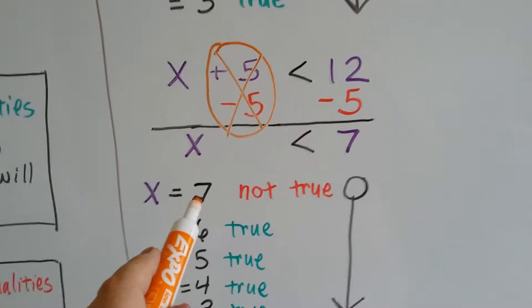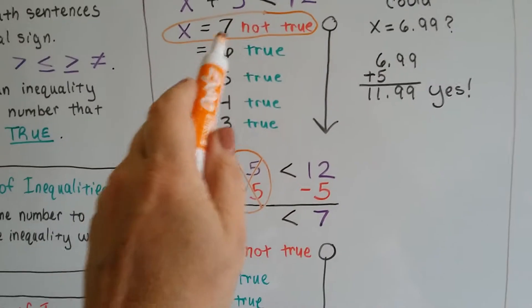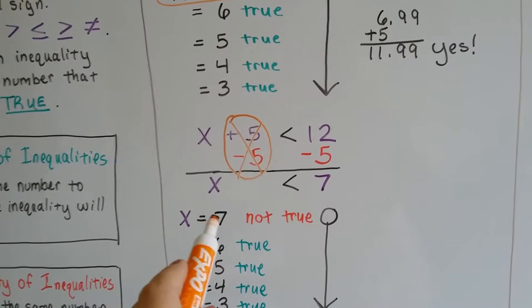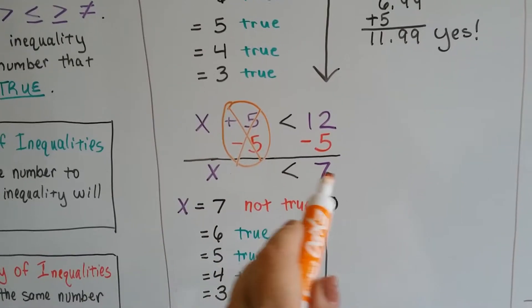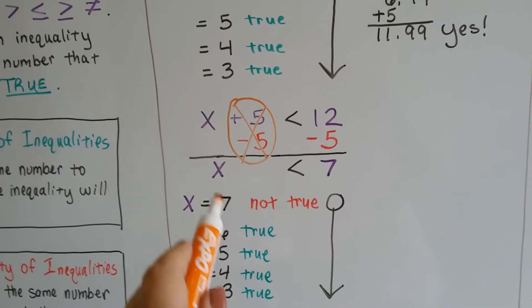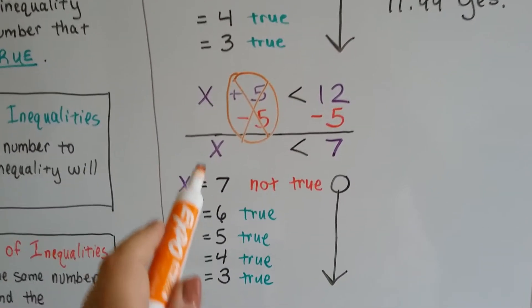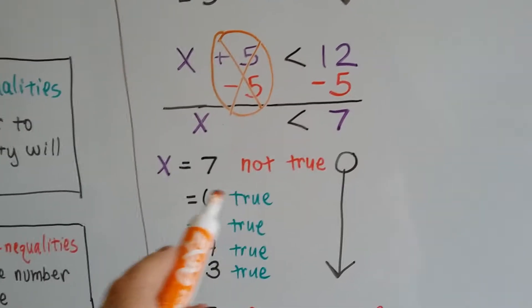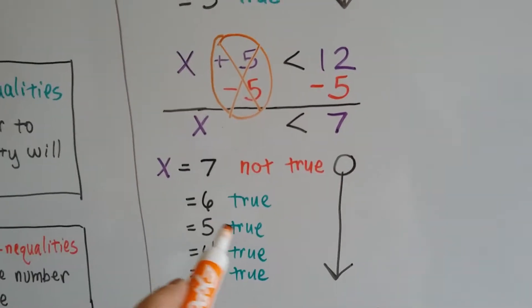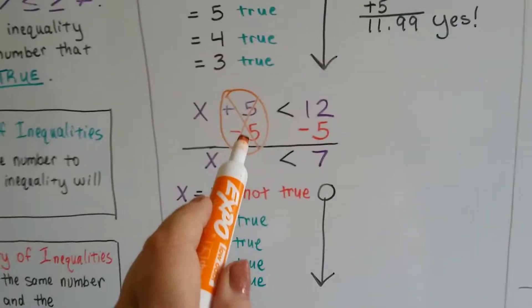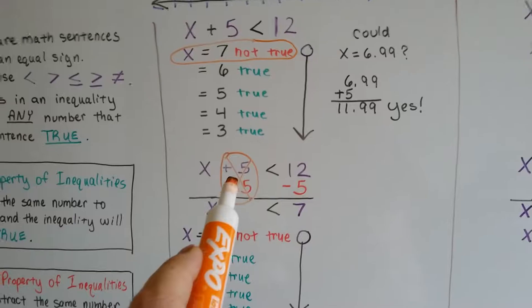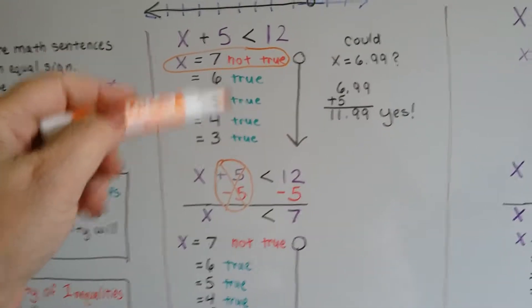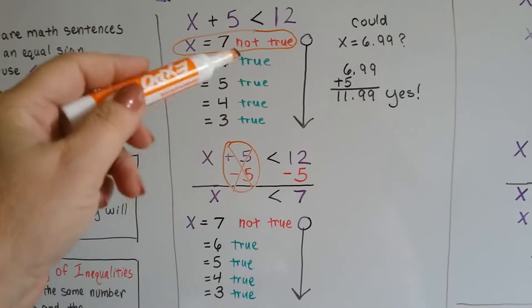We know that from up here that 7 made it not true. If x were 7, that would still be not true. What if x were 6? Yes, it's true. And 5, it's true. 4, it's true. 3, it's true. So even though we subtracted 5 from each side of our inequality, we have the same answers that we do up here.